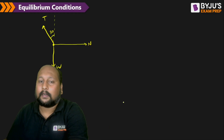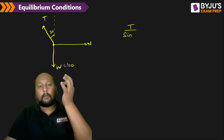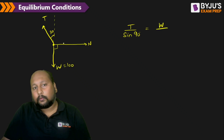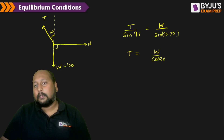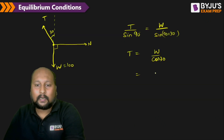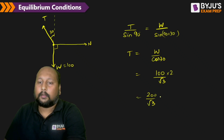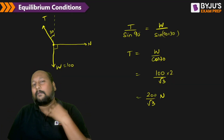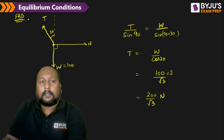Drawing the free body diagram at point O: weight W acts downward, tension T acts along the string at 30 degrees from the wall, and normal reaction acts horizontally. The angle between the normal reaction and weight is 90 degrees; the angle involving the weight side is 90 plus 30 equals 120 degrees. Applying Lamy's theorem: T/sin(90°) = W/sin(120°), giving T = W cos(30°) = 100 × (√3/2), so T equals 200/√3 newtons.